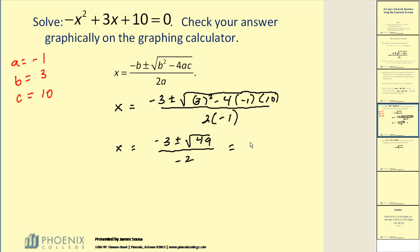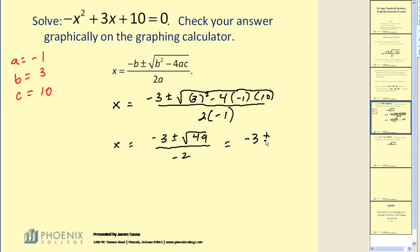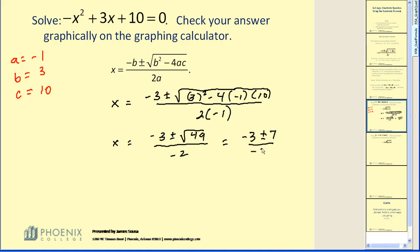And it happens that 49 is a perfect square, so this becomes negative three plus or minus seven divided by negative two. So we have two solutions.